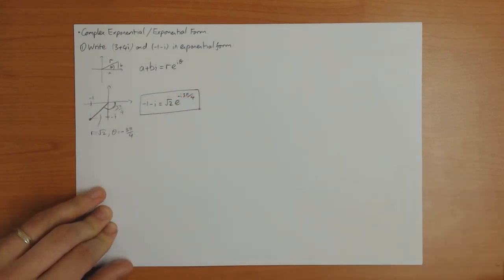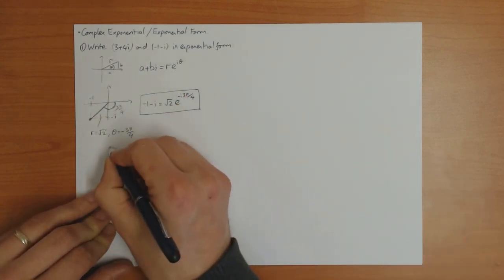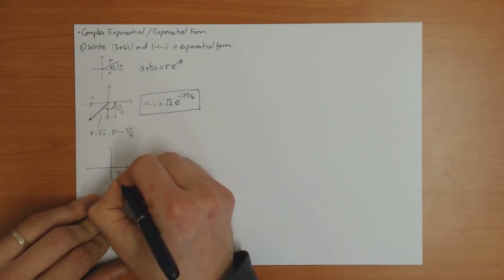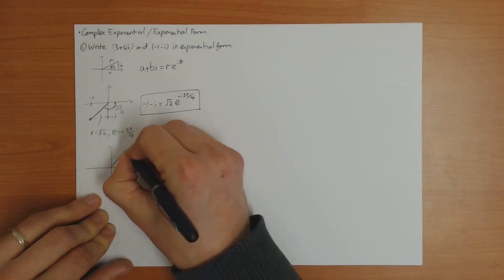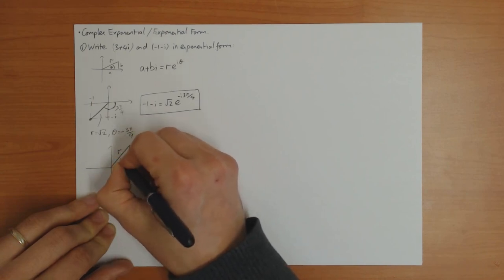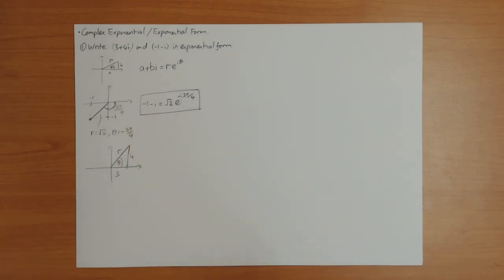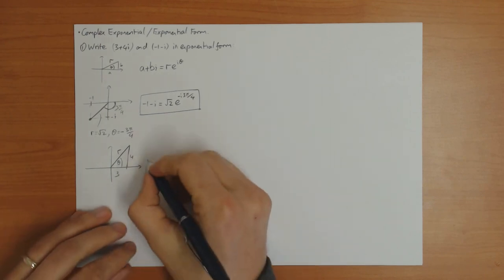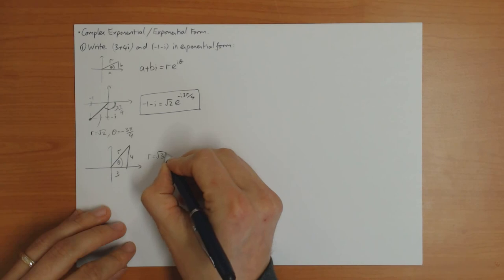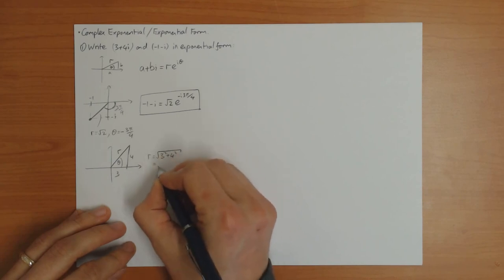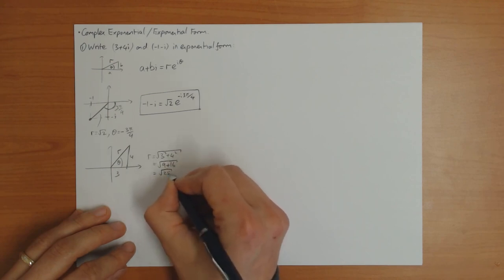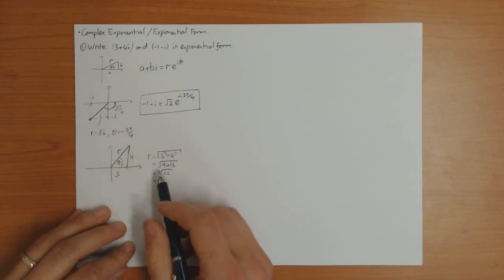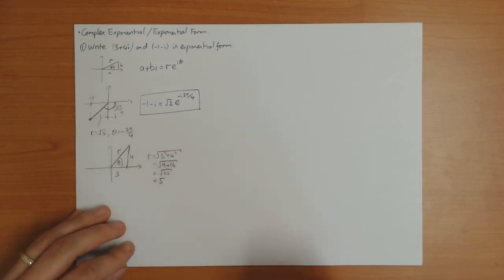Let's look at the second one: 3 plus 4i. That's 3 units this way, 4 units this way, and that's that triangle there. So r and theta. I chose this example so r would come out as something nice. Here r is the square root of 3 squared plus 4 squared, which is square root of 9 plus 16, which is square root of 25, which is 5. So 3, 4, 5 is a Pythagorean triangle. So r is 5.